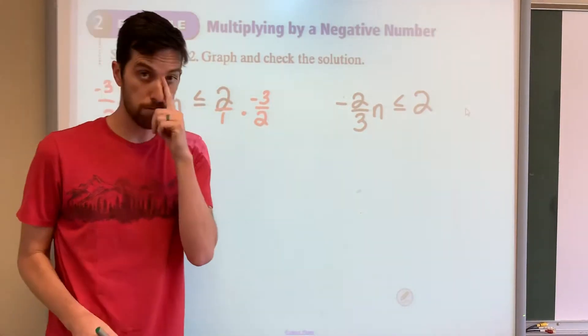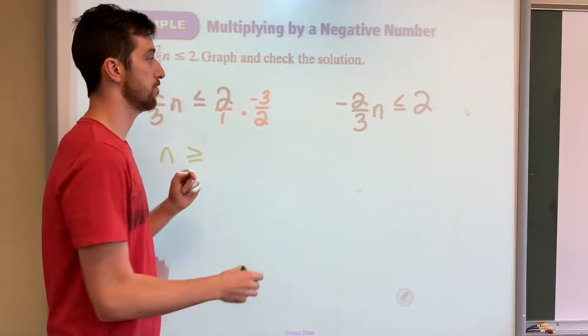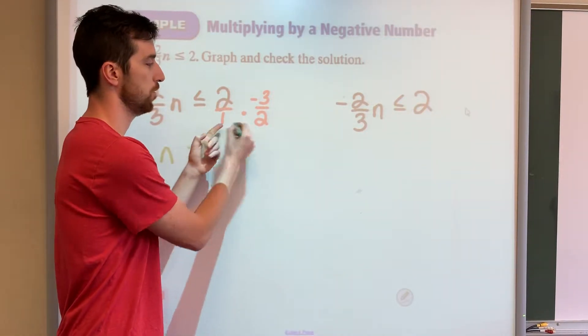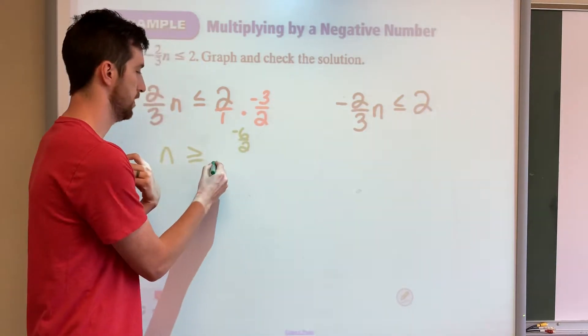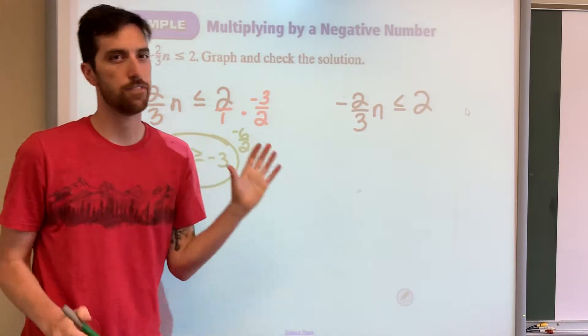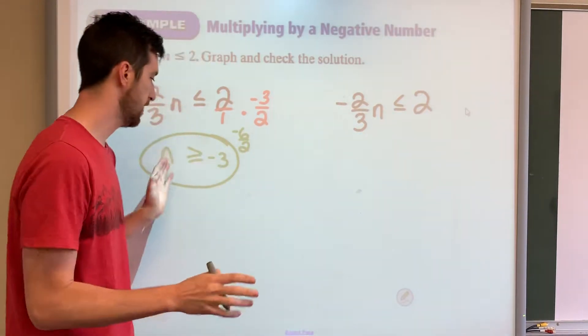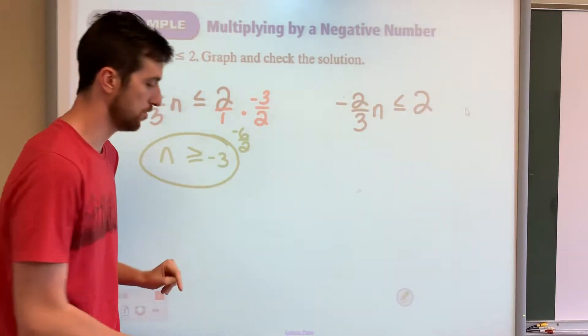So if we multiply, 2 times negative 3 is negative 6. 1 times 2 is 2. Negative 6 over 2 is negative 3. So there would be our final answer for the inequality. N is greater than or equal to negative 3.